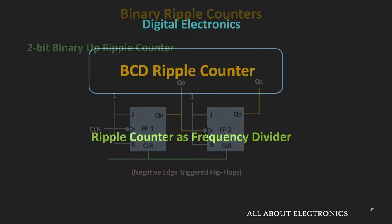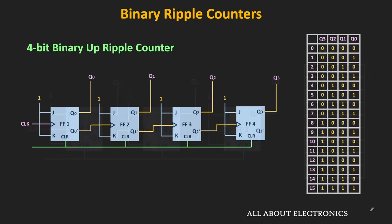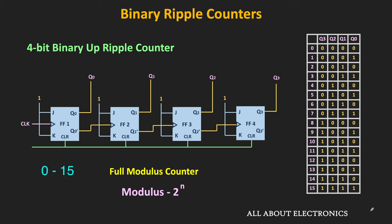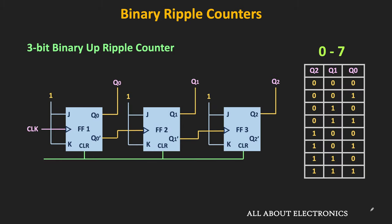In the previous video, we have seen the 2-bit, 3-bit, and the 4-bit ripple counters. All the counters we discussed were full modulus counters, meaning that the modulus of these counters is equal to 2 to the power n, where n is the number of flip-flops. For example, this 4-bit ripple counter counts from 0 to 15, so its modulus equals 2 to the power 4. Similarly, this 3-bit counter counts from 0 to 7, with modulus 2 to the power 3.